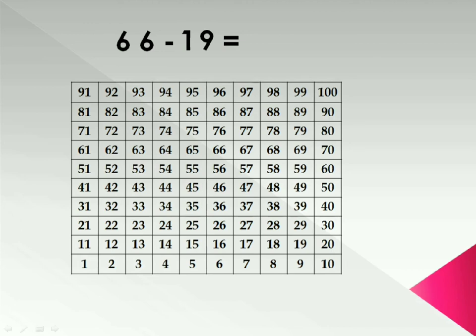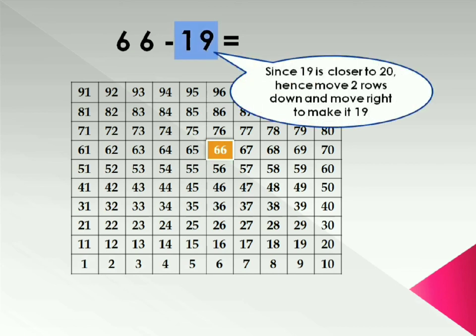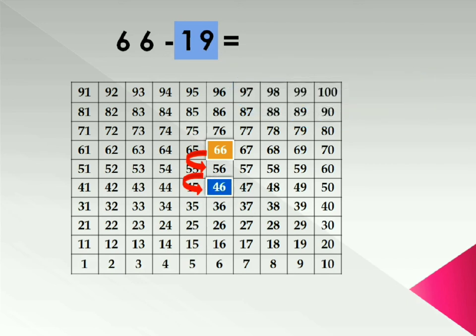So the next example is 66 minus 19. Highlight 66 in the table. And do note 19 is close to 20. That is two tens. So it means we have to move two steps downward. That is 46. Now make one right move to make it 19. That is 47. Because 19 is one less than 20. Hence one right move.